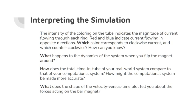What does the shape of the velocity versus time plot tell you about the forces acting on the bar magnet? The shape of the velocity versus time plot tells us that the forces are initially not balanced, with fluctuations in both directions before they eventually level out.